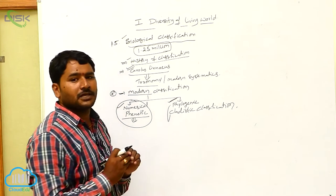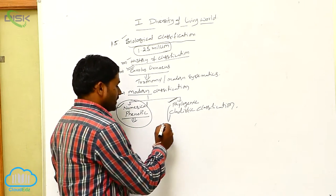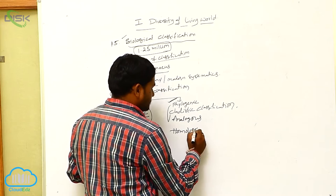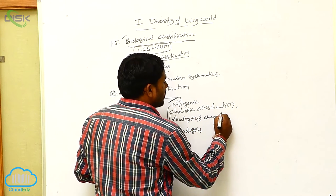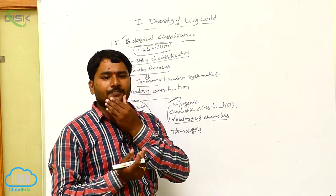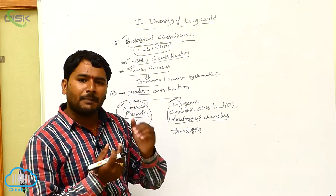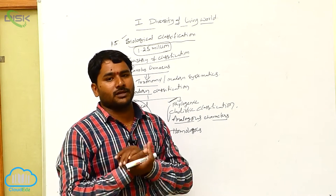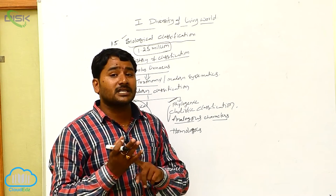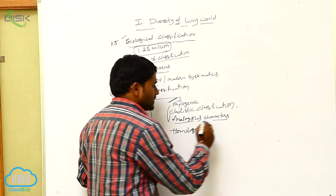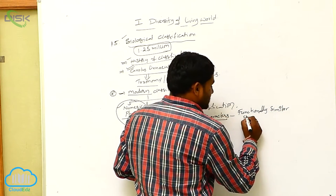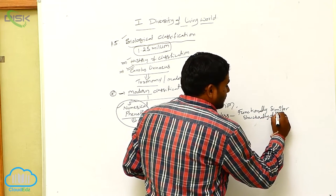Phylogenetic classification follows two types of characters: analogous characters and homologous characters. Analogous characters are characters shared by a pair of organisms due to convergent evolution. These characters are functionally similar but structurally different.